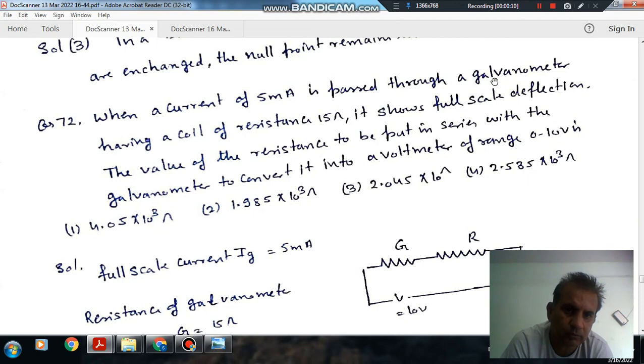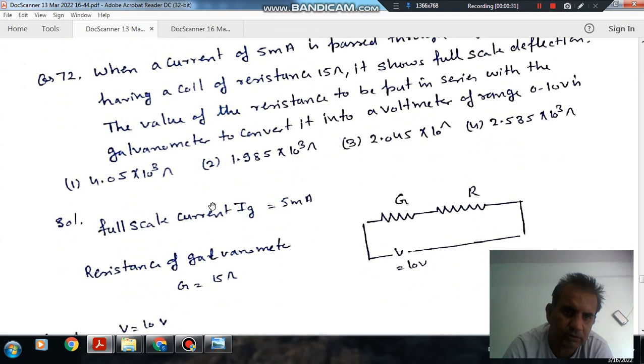Question number 72: When a current of 5 milliampere is passed through a galvanometer having a coil of resistance 15 ohm, it shows full scale deflection. The value of the resistance to be put in series with the galvanometer to convert it into a voltmeter of range 0 to 10 volt is: